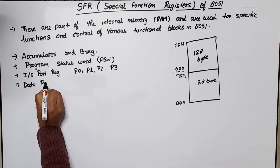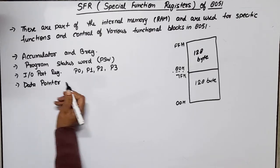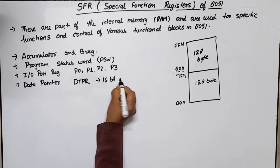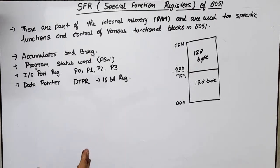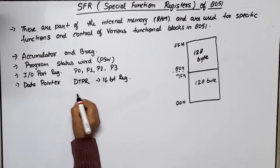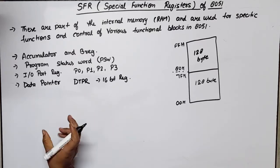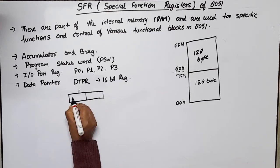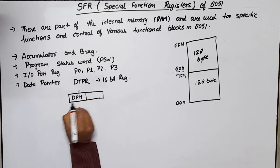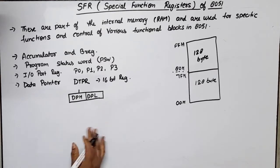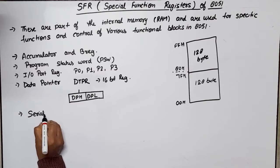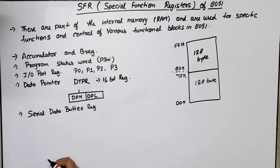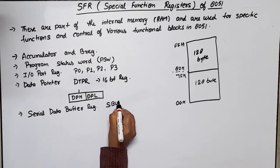Next is the Data Pointer, defined as DPTR. This is a 16-bit register used to hold the 16-bit address of external memory. If we divide it into 8 bits, it is called DPH — Data Pointer Higher byte — and DPL — Data Pointer Lower byte. Next is the Serial Data Buffer Register, used for serial communication, called SBUF, which is an 8-bit SFR.